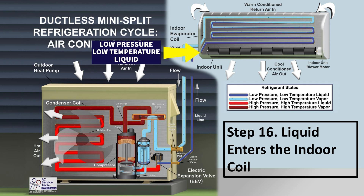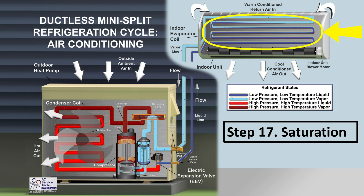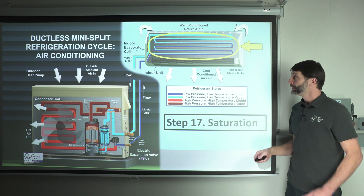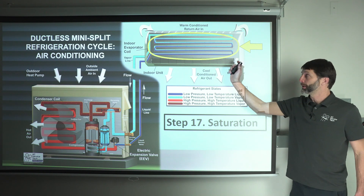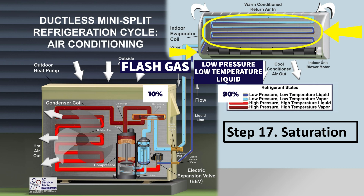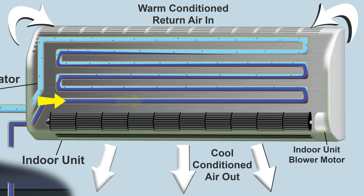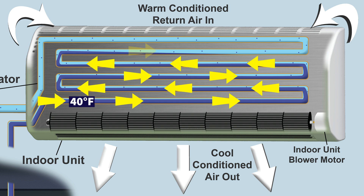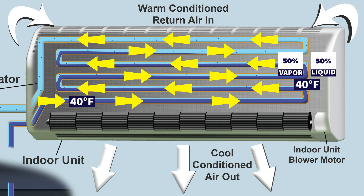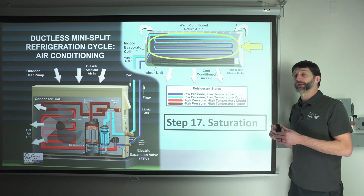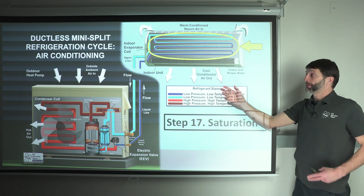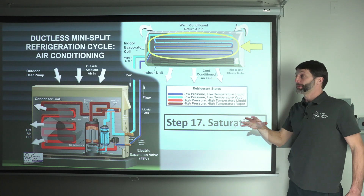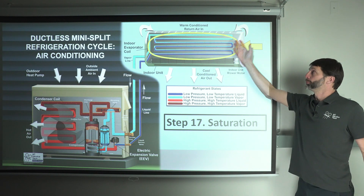The liquid enters the indoor coil: low pressure, low temperature liquid entering the indoor coil. Next you have saturation, where the phase change occurs so the refrigerant absorbs heat from the indoor air, lowering the temperature of the indoor air. It remains the same temperature the entire time — you have 90% liquid and 10% flash gas, so it's already saturated as it enters the indoor coil. Say it's 40°F where it's 90% liquid and 10% flash gas. Even when it's 50% liquid and 50% vapor, it's still 40°F. Even at 90% vapor and 10% liquid, it's still 40°F. That refrigerant holding itself at 40°F — or maybe 35°F or 45°F — is what allows it to absorb heat from the indoor air. That's the key to the whole process.